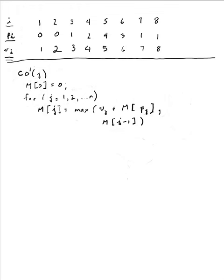This is the third in a connected set of lectures regarding the dynamic programming solution for the weighted interval scheduling problem. I have copied my set of intervals and relevant information from the previous lectures. You can see I have eight intervals. I'm not specifying the start time and finish time of these intervals, but I have as much information as I need in this row labeled p sub i.